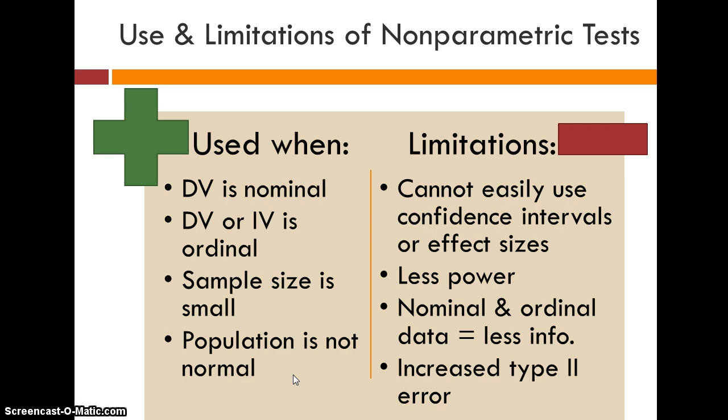The last part is that we actually have an increased type 2 error rate. So, that means that we're less likely to reject the null hypothesis when we should. So, those are the drawbacks is that we just don't have as powerful of a test and we're likely to commit more type 2 errors.